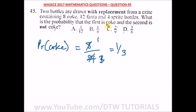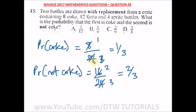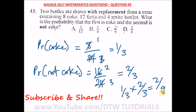Since it is drawn with replacement, the probability the second is not Coke: not Coke means 12 Fanta plus 4 Sprite, which is 16 out of 24, simplifying to 2 over 3. Therefore, the probability that the first is Coke and the second is not Coke is 1 over 3 times 2 over 3, which equals 2 over 9. The correct answer is option C.